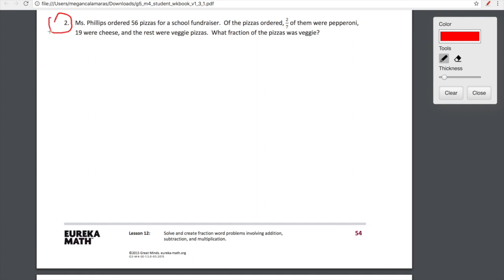Let's take a look at number two. We have Ms. Phillips ordered 56 pizzas for a school fundraiser. Of the pizzas ordered, two sevenths of them were pepperoni, 19 were cheese, and the rest were veggie pizzas. What fraction of the pizzas were veggie? This is a pretty cool problem. Let's go ahead and organize the information that we have into a tape diagram. So we know our whole is that 56. And then we're given a few bits of information. We are told, keep in mind this is not proportional, we are told that 19 are cheese. And then we're told that two sevenths of 56, two sevenths of 56, because that's our whole, are pepperoni.